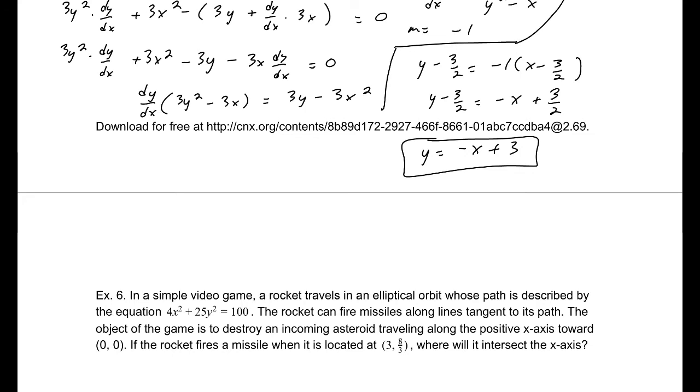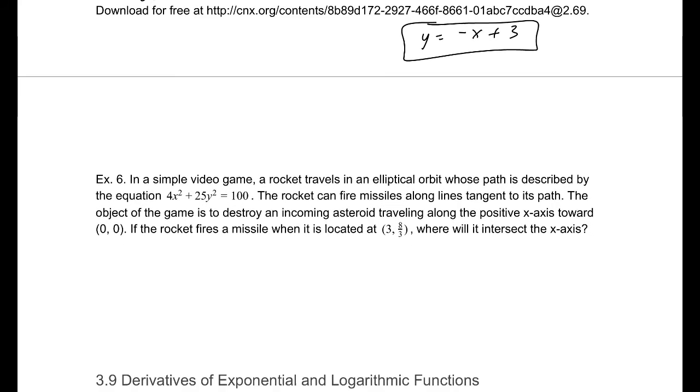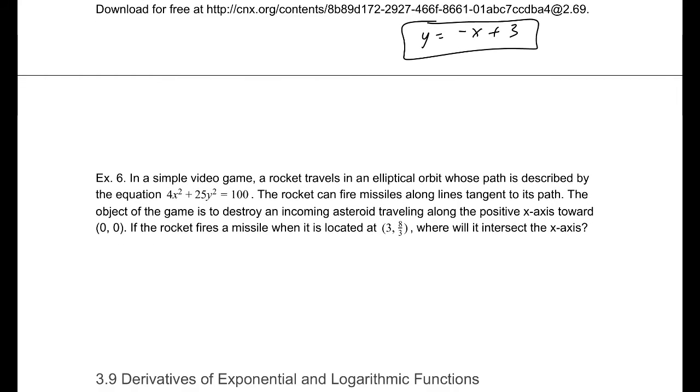So when it's located at 3, 8 thirds, where will it intersect the x axis? So to begin with, let's find the derivative of that function. We actually want the trajectory of the missile that it fires. So we'll need to find the slope of that at some point. So the derivative here is 8x plus 50y dy/dx, and the derivative of 100 is 0. Which makes our dy/dx equal to negative, we'll subtract 8x divided by 50y, and that reduces to negative 4x over 25y. Now our slope is dy/dx evaluated at that point, 3, 8 thirds. So our slope is going to be negative 9 over 50.